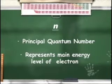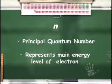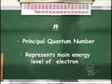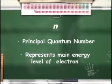If N is one, the electron is in the first energy level, closest to the nucleus. If N is two, the electron is in the second energy level. If N is three, the electron is in the third energy level, and so on. The larger the value of N, the farther away from the nucleus the electron is, and the higher the energy of the electron.